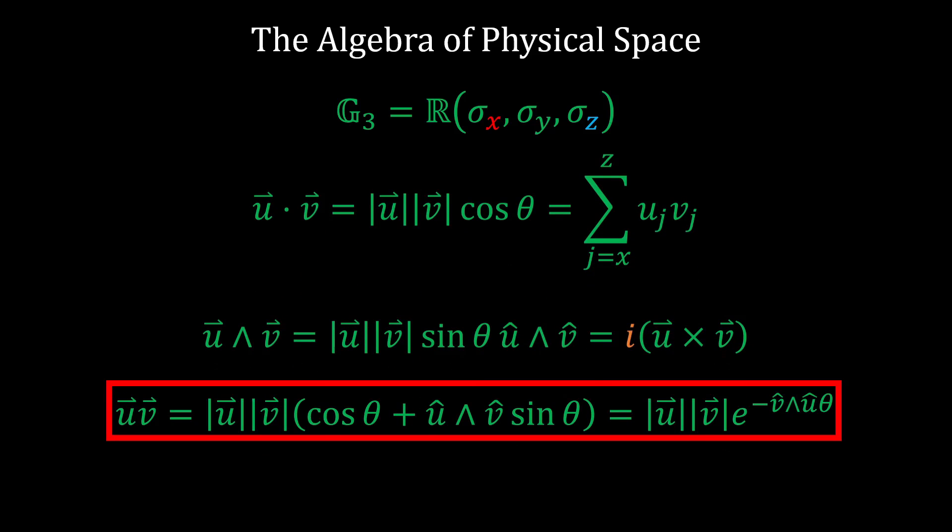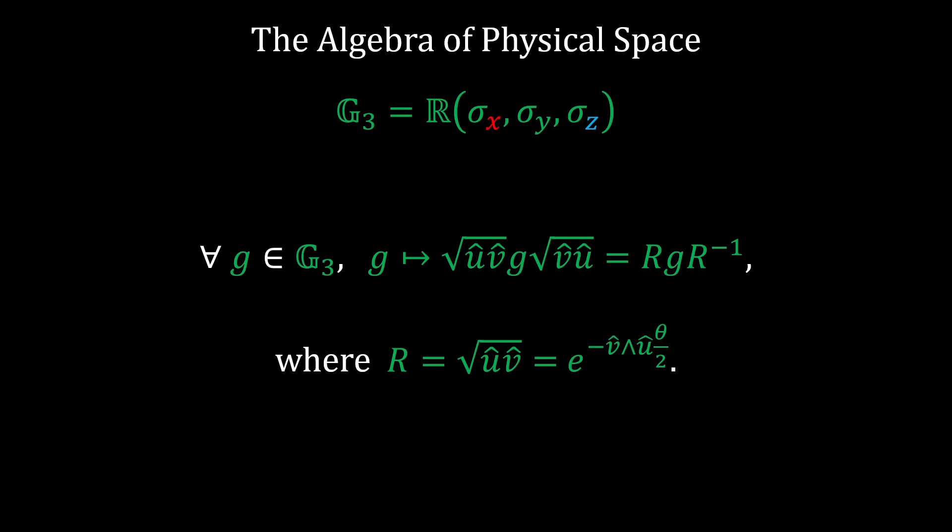Substituting in the trigonometric forms of these products, we can see that a pair of vectors multiplied together can be written in Euler form, where the unit bivector generated by the outer product acts like an imaginary unit because it squares to negative one. The general formula for rotating another object is then given by the sandwich product, where the square root of the vector product defines what is called a rotor. Although we're working in the APS, this covariant transformation law is dimension agnostic like most things in geometric algebra. This is enough of an introduction, let's now take a look at bisectors.